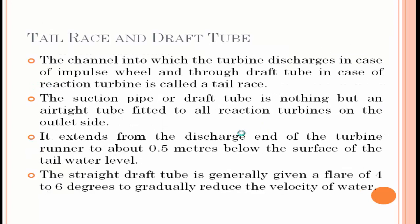Next is the tail race and draft tube. The tail race is the outlet of the turbine — the final path after water passes through the reservoir, surge tank, penstock, and powerhouse. The tail race is the channel into which the turbine discharges — in the case of an impulse wheel it is a normal channel or pipeline, whereas in the case of a reaction turbine it will have a draft tube.